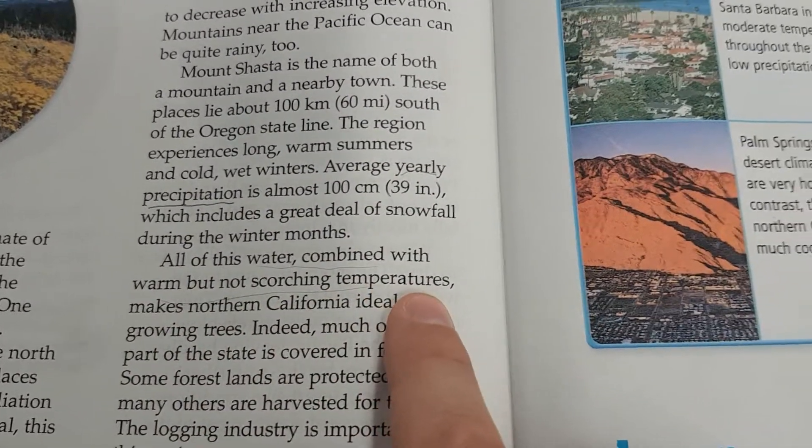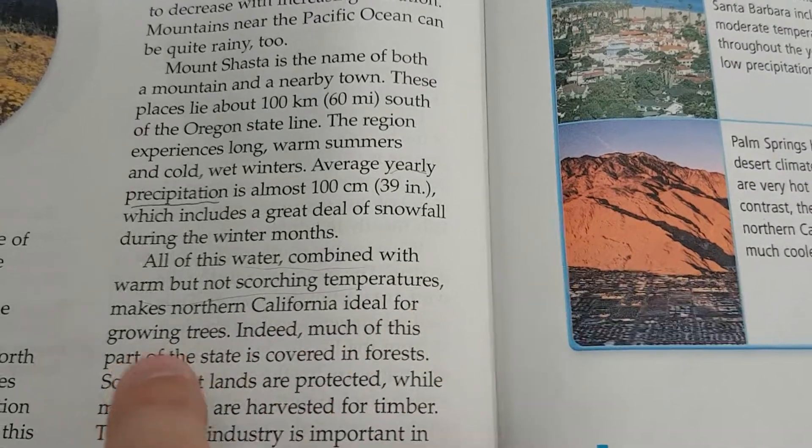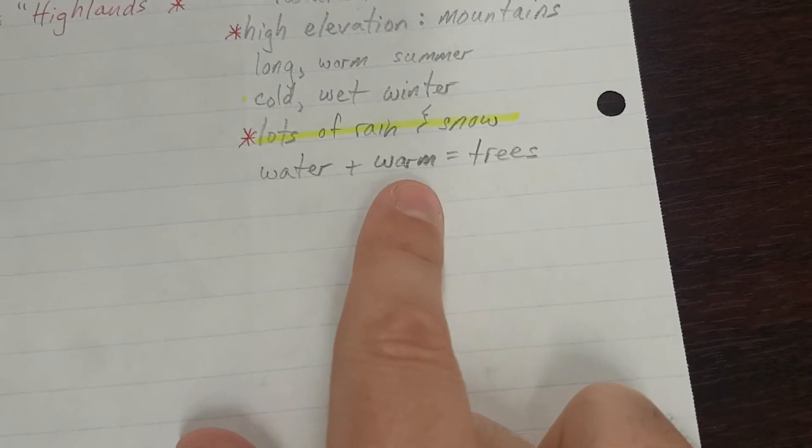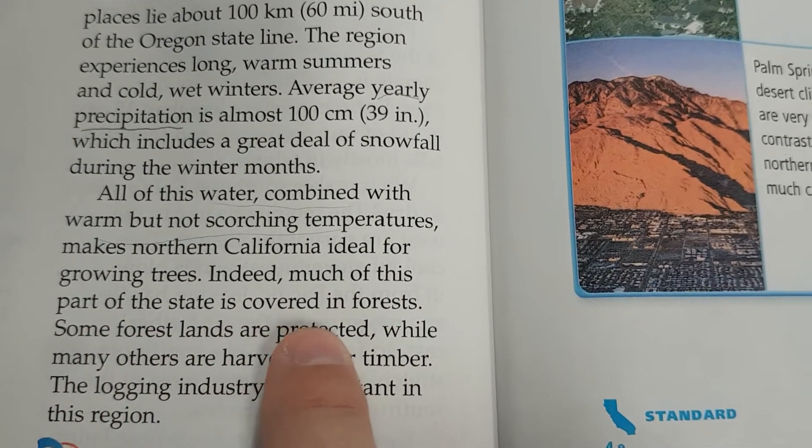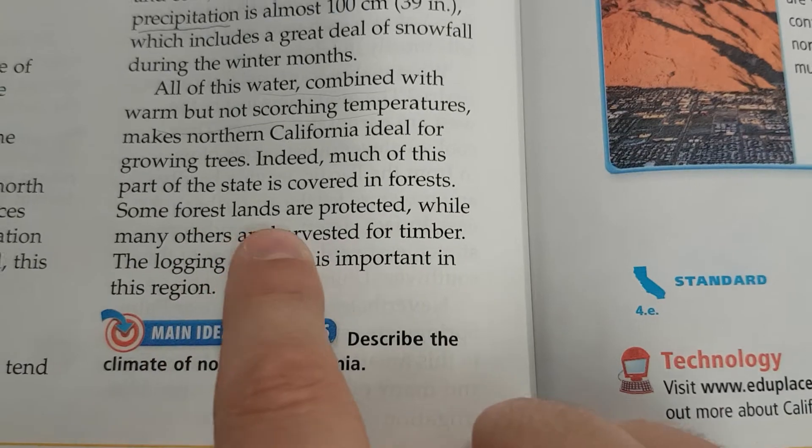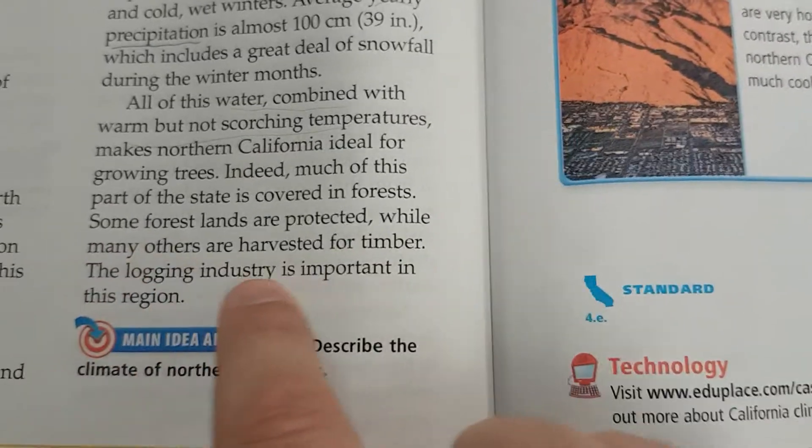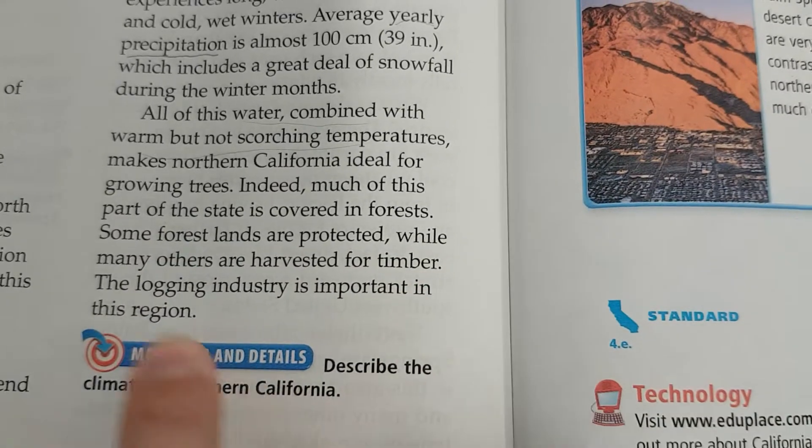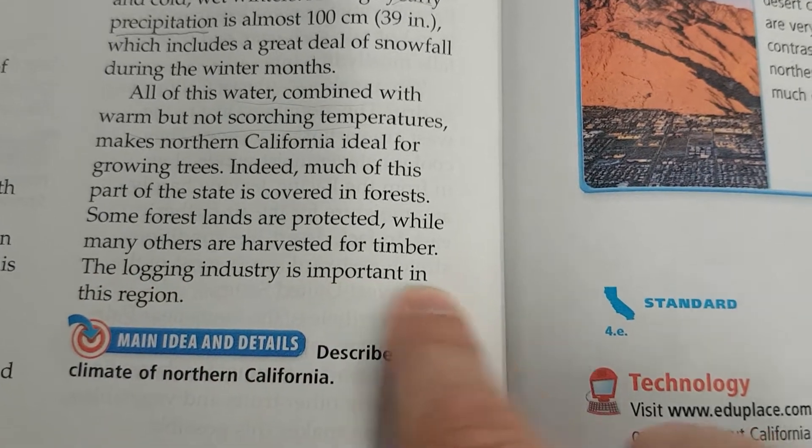All of this water, combined with warm but not scorching temperatures, makes Northern California ideal for growing trees. Water plus warm equals trees. Indeed, much of this part of the state is covered in forests. Some forest lands are protected, while many others are harvested for timber. The logging industry is important in this region.